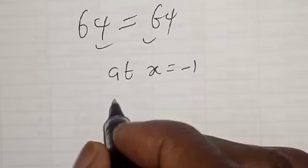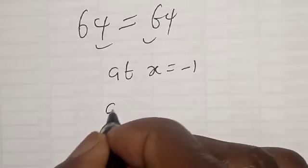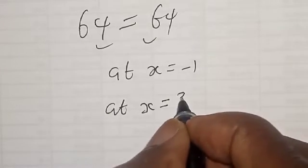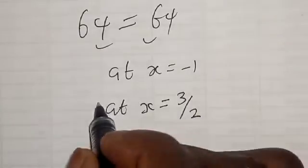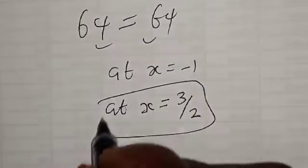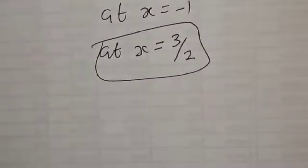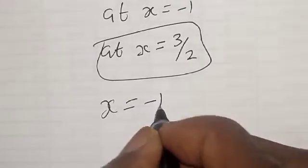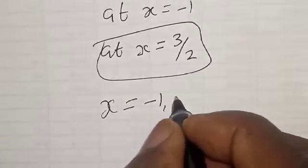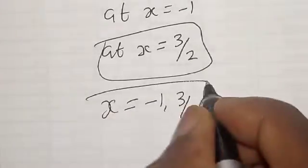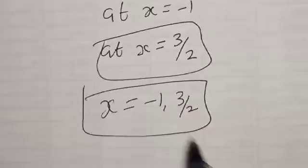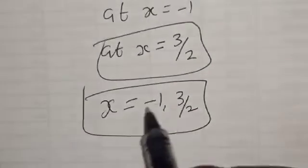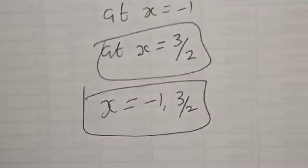You can also check at s equals 3 over 2 and you will get the same result. So our final values are s equals minus 1 and s equals 3 over 2. If you have enjoyed the class, please don't forget to like, share, comment and subscribe. Thank you.